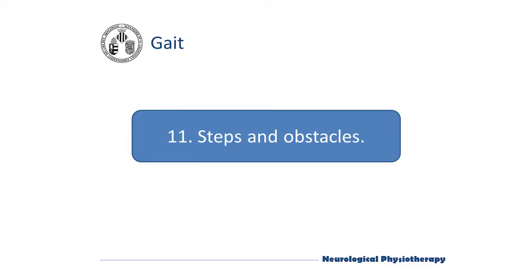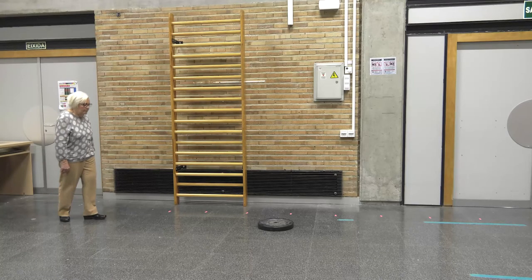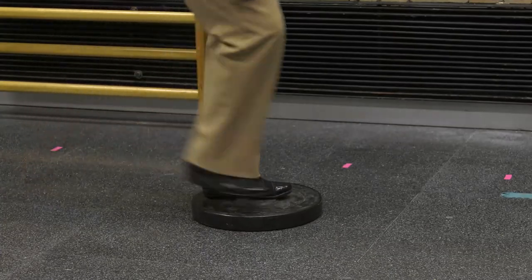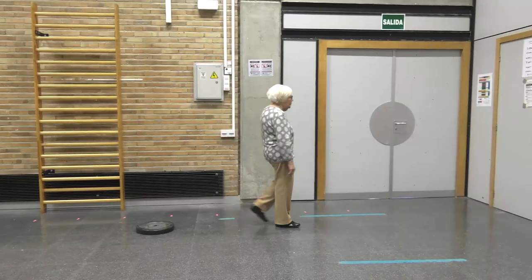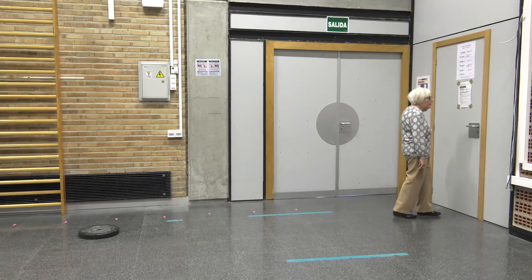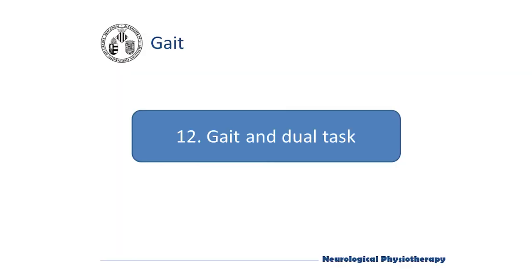Steps and obstacles are an added difficulty to gait training. Overcoming these obstacles will help the patient avoid gait blocks in daily life as well as walking more safely. Finally, we can ask the patient to add dual tasks while walking — this is done on a flat surface and both cognitive and motor tasks of the arms can be used.